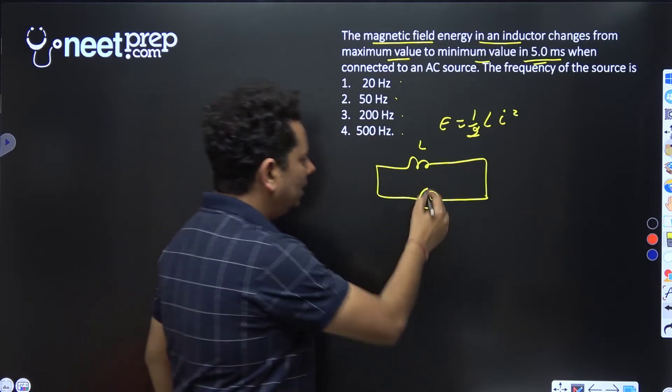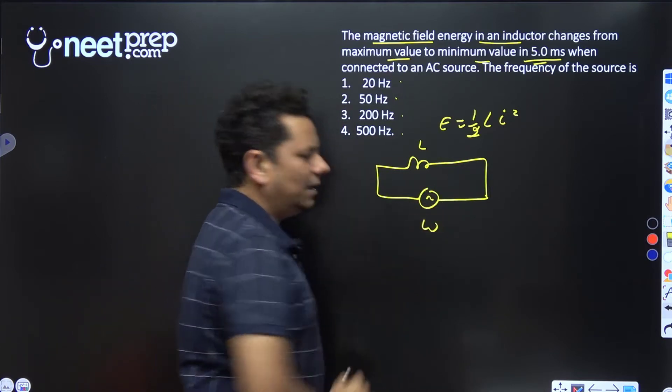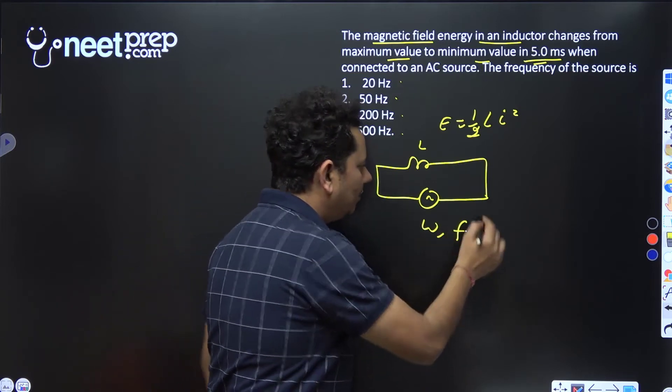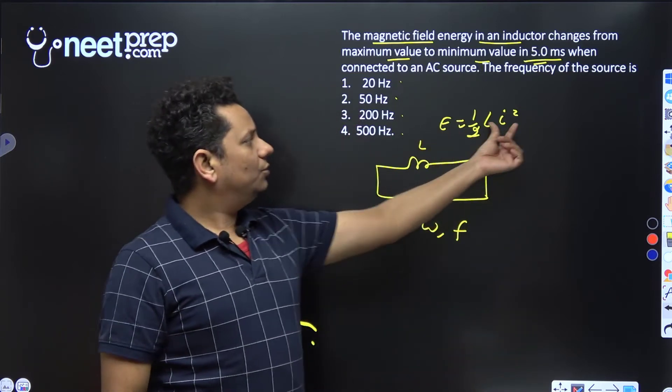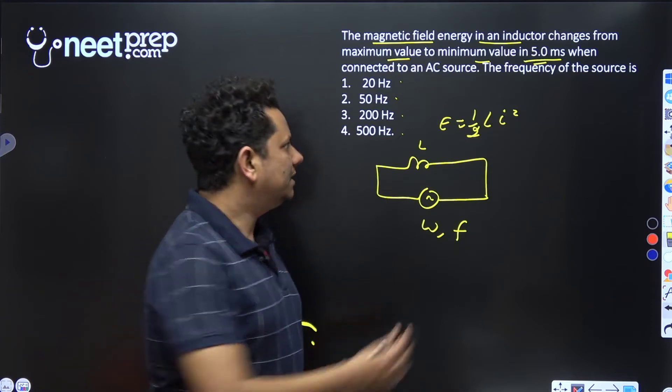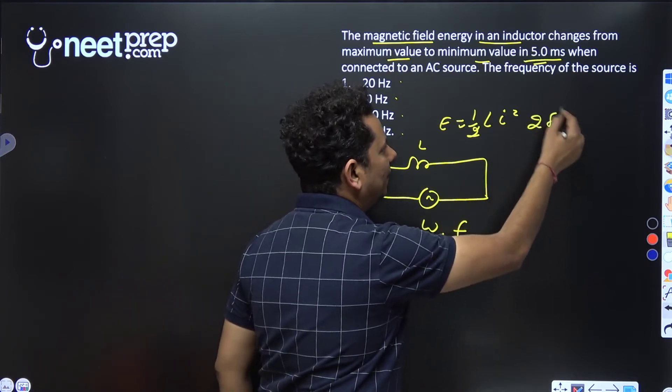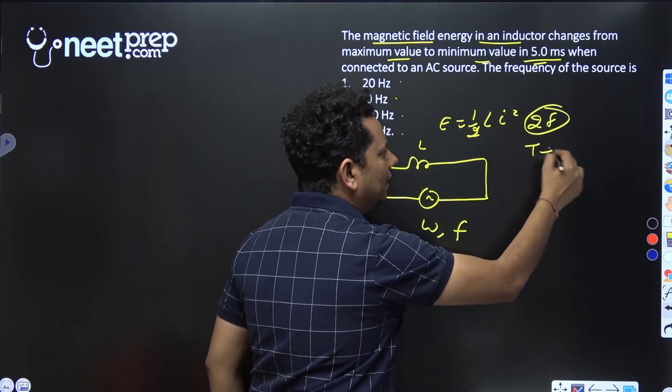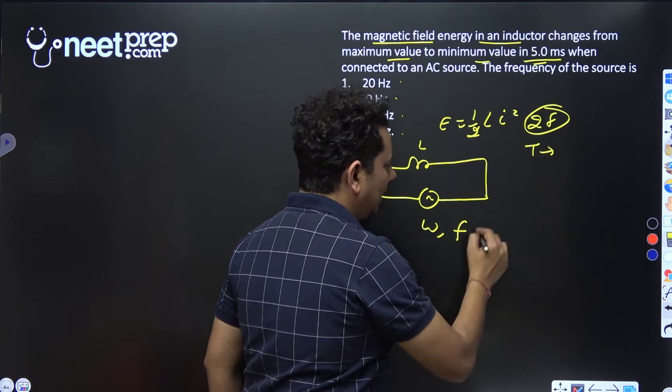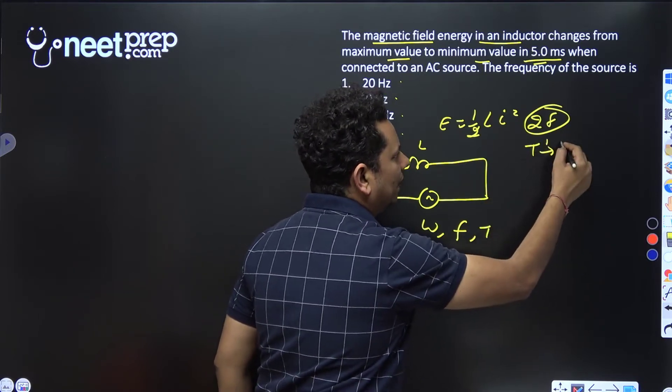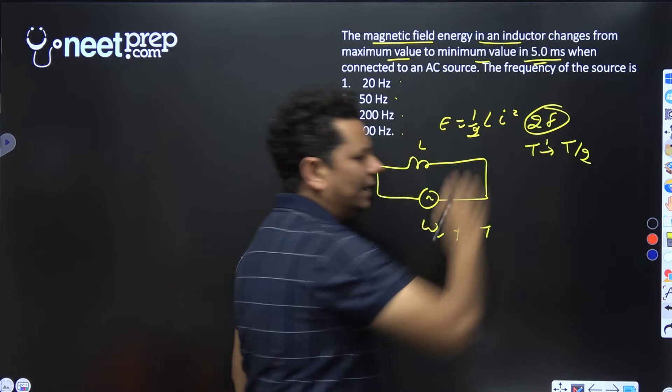The original source has angular frequency ω and frequency f. Since energy depends on I², which varies as sine squared, the frequency becomes 2f and the time period becomes T/2.